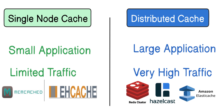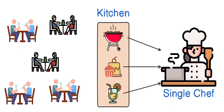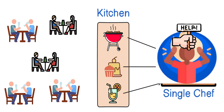Now let's see how exactly distributed caching works in real-world applications. Imagine a big restaurant kitchen preparing food for thousands of customers daily, serving different items such as grilled dishes, desserts, drinks, and many more categories. If all orders are handled by a single chef, that chef will quickly get overwhelmed, causing burnout and delays. And those delays will cause dissatisfied customers — something no business can afford.